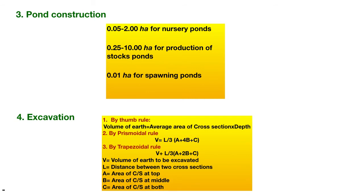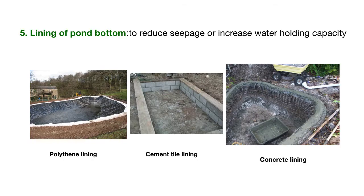The following size ranges have generally been suggested: 1.05 to 2 hectares for nursery ponds, 0.25 to 10 hectares for production and stocking ponds, and 0.01 hectare for spawning ponds. The earthwork involved in excavation can be estimated using standard methods. Mechanical equipment like bulldozers, scrapers, and crawler tractors are used for larger farm construction. Lining of the pond bottom is essential because it reduces seepage and increases water-holding capacity; lining can be done using concrete, soil cement, polythene film, bricks, or cement tiles.